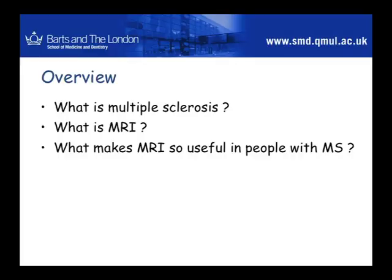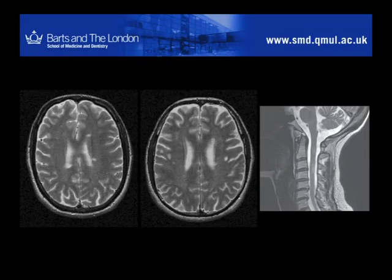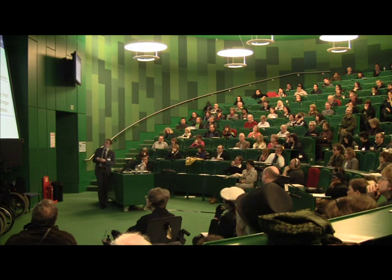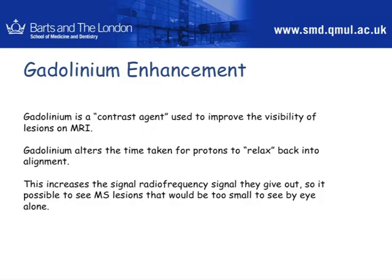What makes MRI so useful for people with MS is that we can see these changes — these lesions, as we call them. You've heard from Sandra before about lesions in the spinal cord and the brain, which we call hyperintensities. This is a very common finding; in fact, virtually everybody who has MS does show these changes.